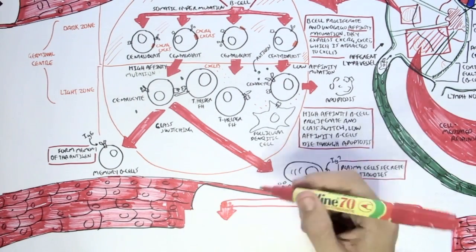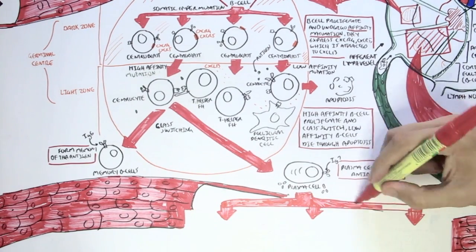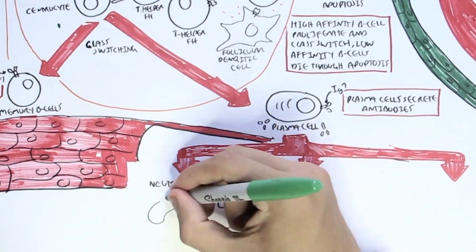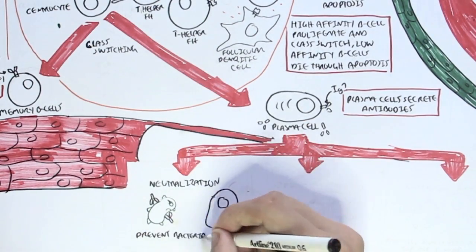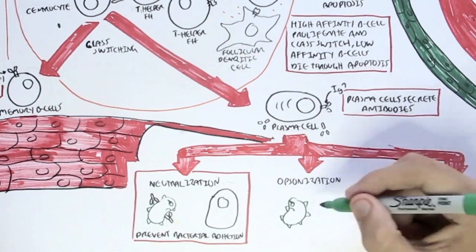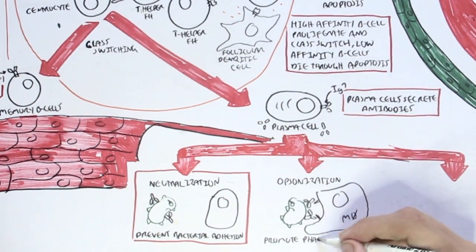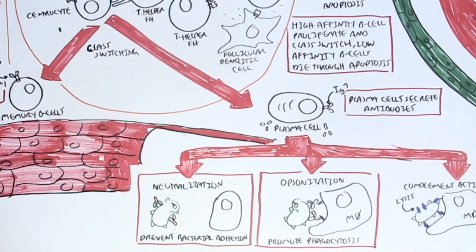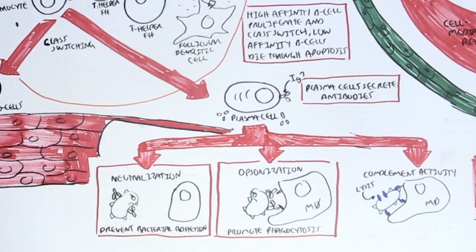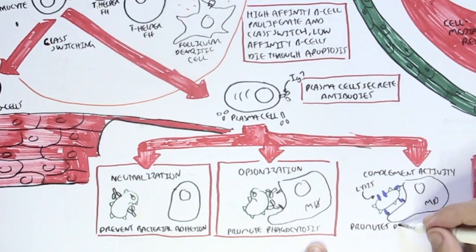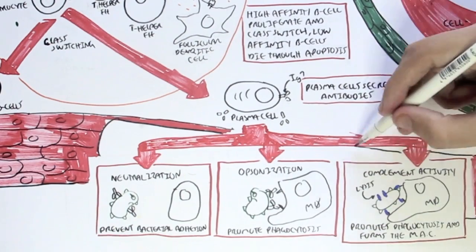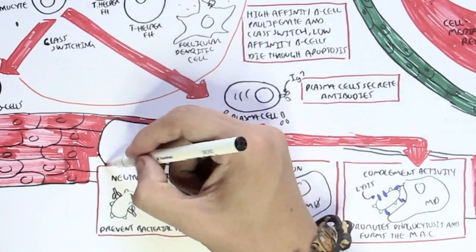What do antibodies do? They do three main things. First, antibodies can neutralize a pathogen, basically preventing it from adhering to other cells. Second, antibodies opsonize a pathogen, which promotes phagocytosis and helps phagocytes engulf these pathogens more easily. Third, antibodies activate the complement proteins, which help destroy pathogens and stimulate phagocytosis. Complement proteins help destroy the pathogen by forming the membrane attack complex, which causes the bacterium to lyse — to burst open.